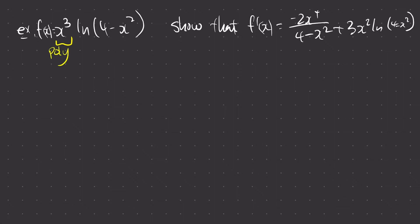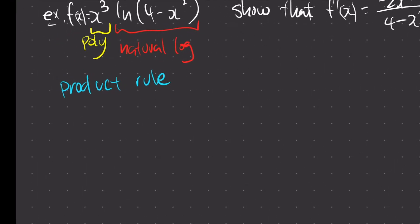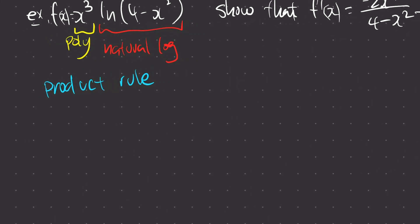Based on this, we know that we have two function types multiplied with each other. What does that mean? We have to use the product rule. How do you do the product rule? Very simple: d the first, don't d the second, plus d the second, don't d the first.